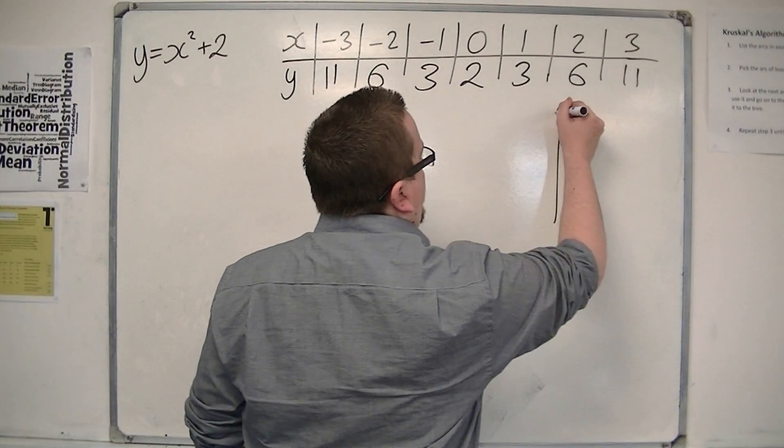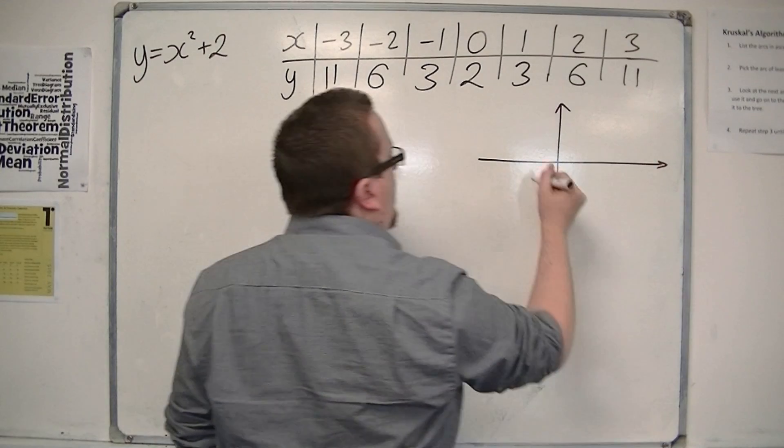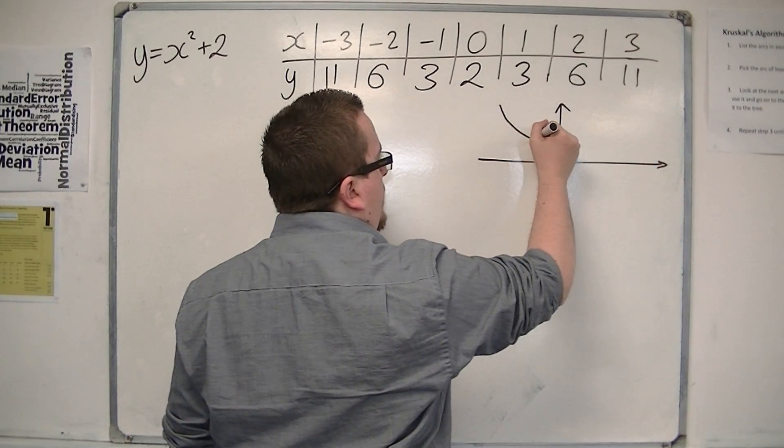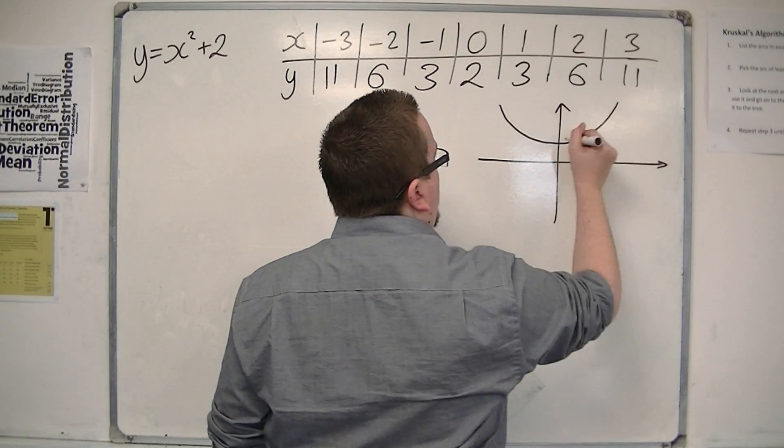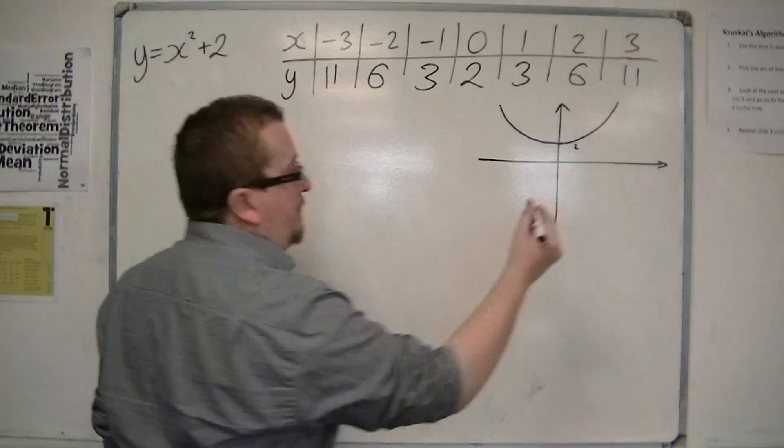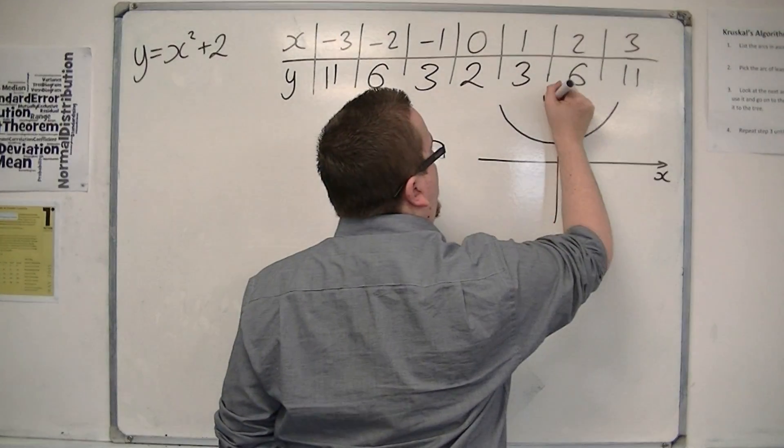So if I was going to plot this graph, then I know it would be a parabola that goes through 2 on the y-axis. So that's little x and little y.